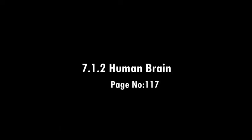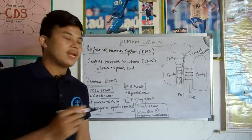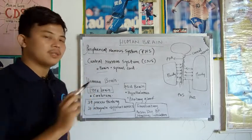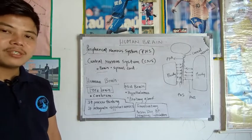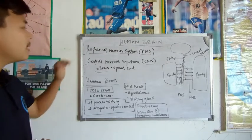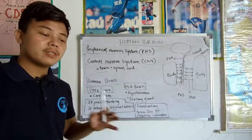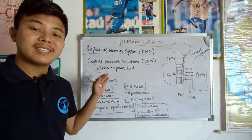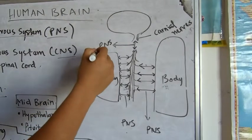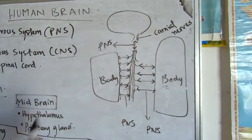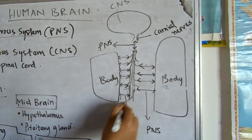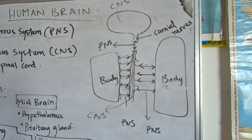Next we will study the human brain. We will cover the peripheral nervous system (PNS) and the central nervous system (CNS). The CNS includes the brain and the spinal cord. The peripheral nervous system makes connections between the central nervous system and the body parts. Nerves arise from the brain and the spinal cord, both of which are part of the CNS.